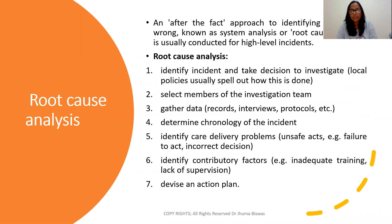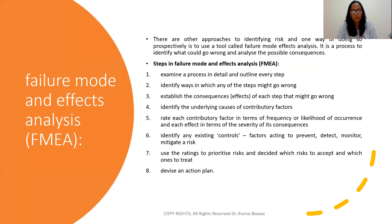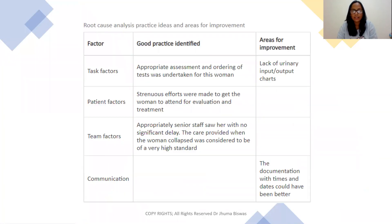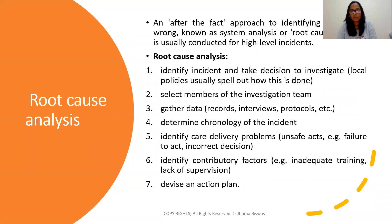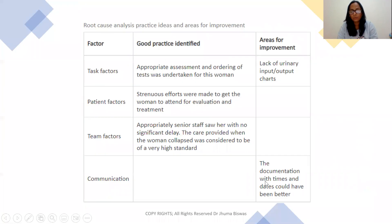The third step is to investigate the incident. There are two ways to do this: root cause analysis and failure mode and effect analysis. In root cause analysis, you first identify the issue to investigate, then select a team for the investigation, gather data from records, interviews, and protocols, determine the chronology of the incident, identify problems in care and contributing factors, and then make an action plan. Root cause analysis is done through the fishbone model, identifying factors at each step — such as task factor, patient factor, team factor, or problems in communication.